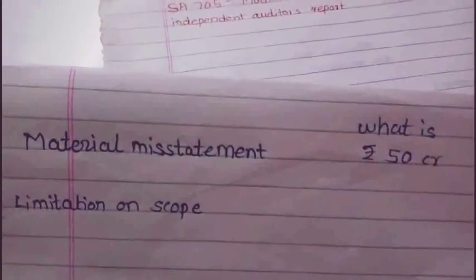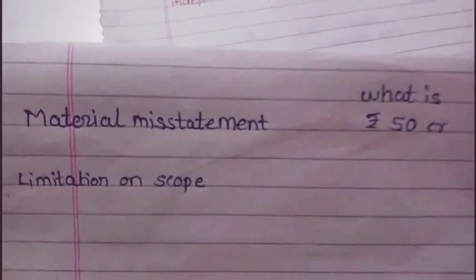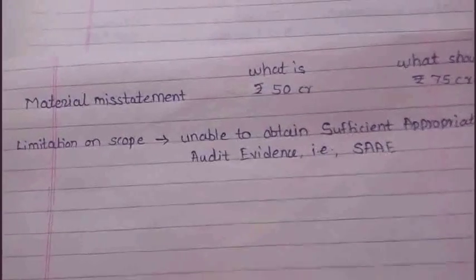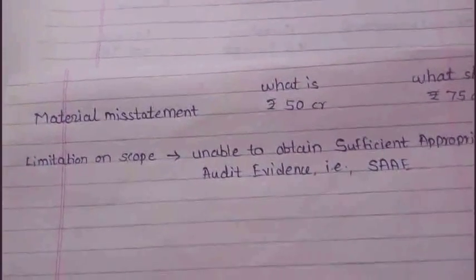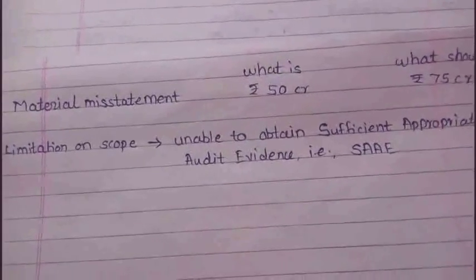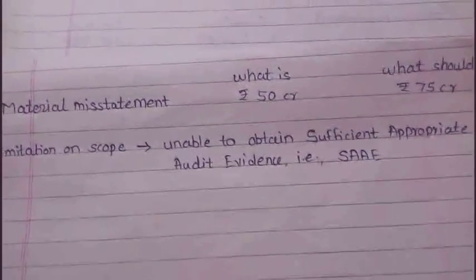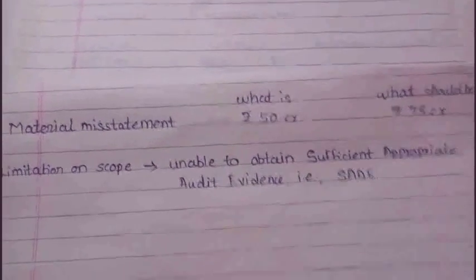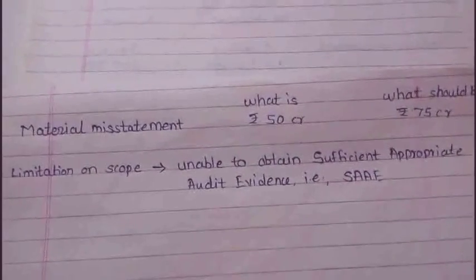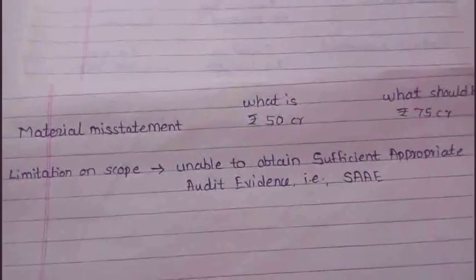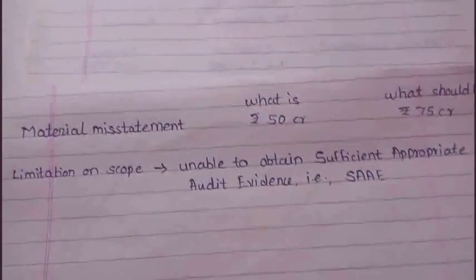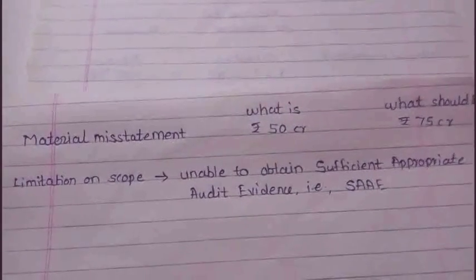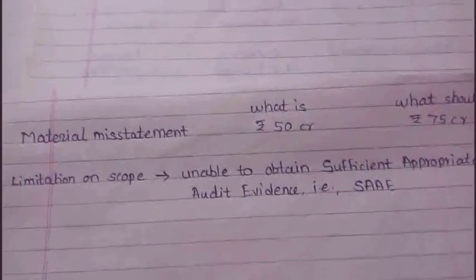After this, there can be a limitation on scope imposed by management for any reason. For example, management says the auditor cannot check the investments. What will the auditor do in this case? Because of the limitation on scope, the auditor is unable to obtain sufficient appropriate audit evidence. Since audit evidence is the base for forming an opinion, if there is no sufficient evidence, the auditor cannot comment on anything.